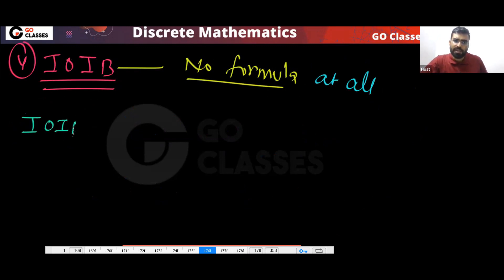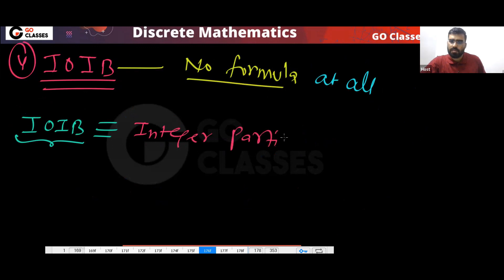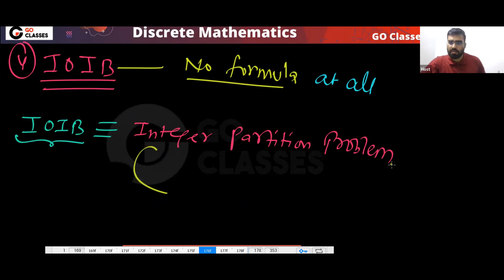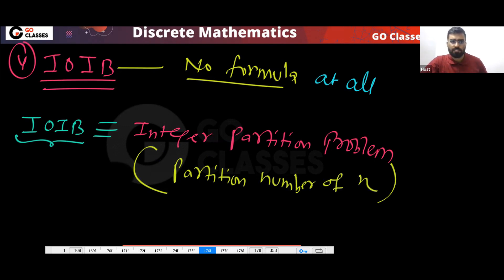For IOIB, always go the systematic way. Which standard problem follows the IOIB template? That is your integer partition problem, also called the partition number of N, written as P(N).